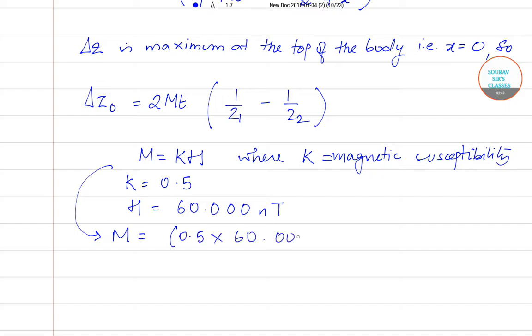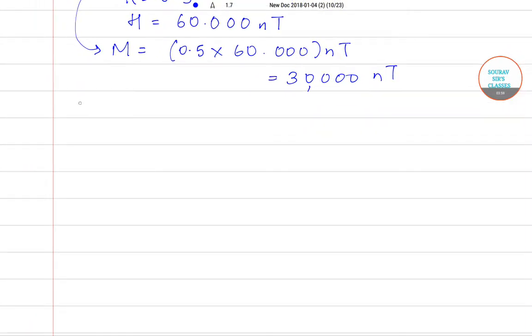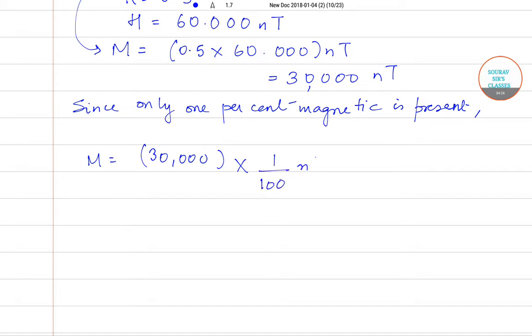Since only 1% magnetite is present, thus M becomes M equals 30,000 into 1 by 100 nT, which is equal to 300 nT.